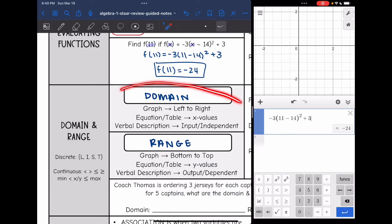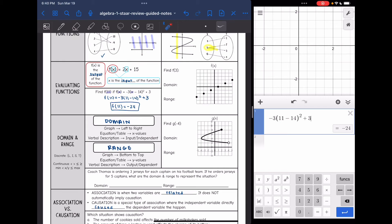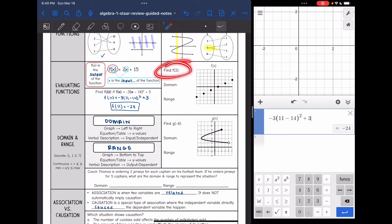So domain is from left to right. In an equation or a table, we're going to look at the x values. And in a verbal description, it's the input or the independent. And then the range is the opposite of that. On the graph, it's from bottom to top. On your equation or table, it'll be the y values. And in your verbal descriptions, it's the output or the dependent values. So let's look at two graphs. We're going to practice evaluating those functions and we're going to practice finding the domain and range.